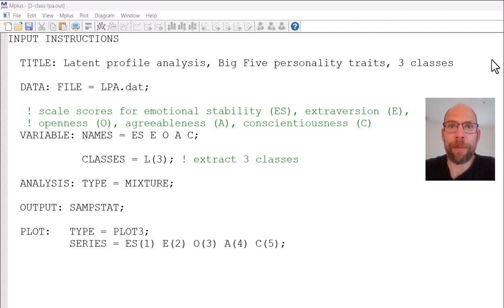Let's jump right into the M plus output file here for a three class latent profile analysis model that I already ran. This analysis is of a data set with five personality variables, scale scores that are supposed to reflect the big five personality traits: emotional stability, extraversion, openness, agreeableness and conscientiousness.